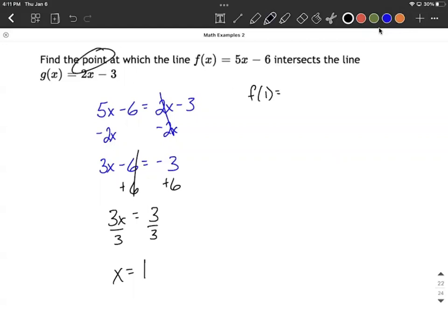So it's going to go in for x. If I used f of x, you could say f of 1 is going to be 5 times 1 minus 6, which makes negative 1. Or if we use g of x and plug in 1 there, we're going to get 2 times 1 minus 3.